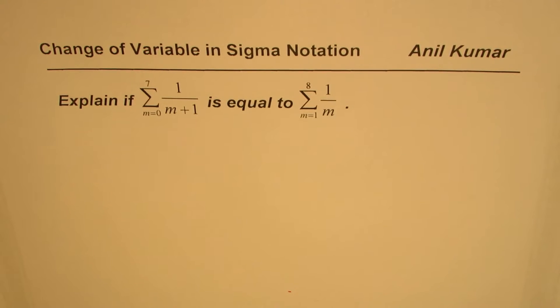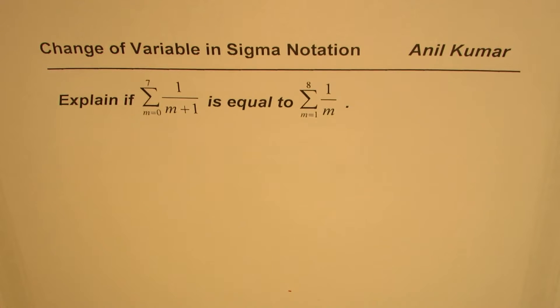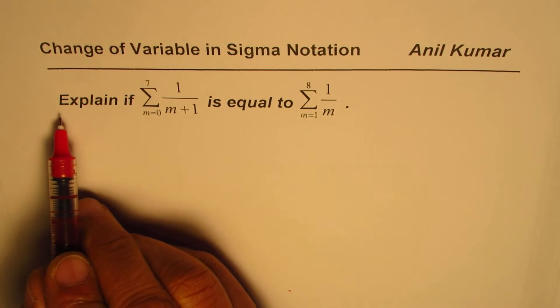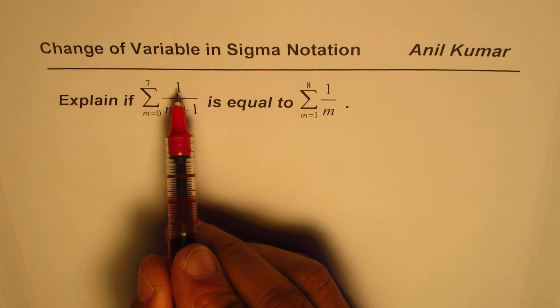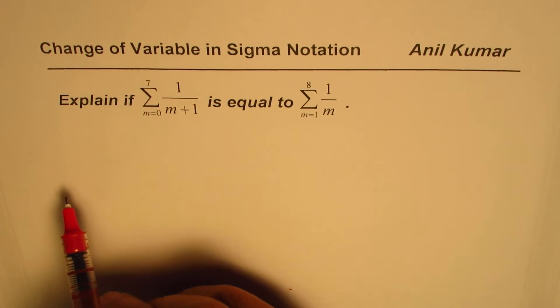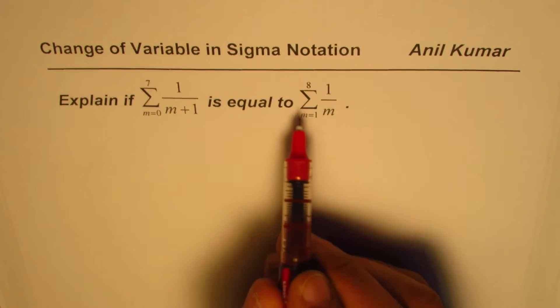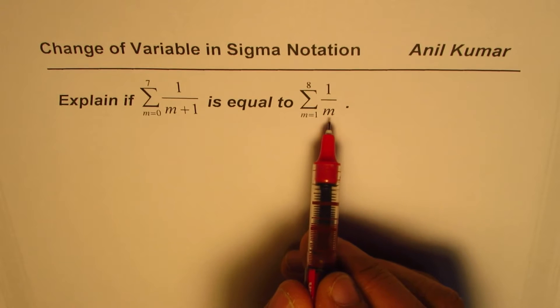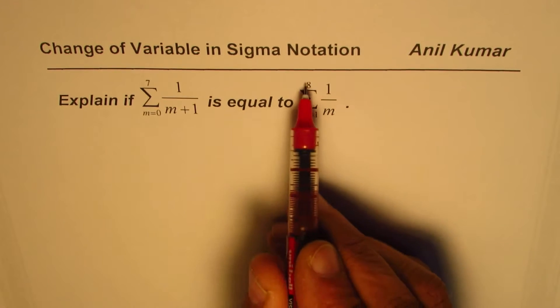I'm Anil Kumar sharing with you a very interesting question on sigma notation. We will learn the technique of changing variables with the help of this example. The question is: explain if summation of 1 over m plus 1, where m changes from 0 to 7, is equal to summation of 1 over m, where m changes from 1 to 8.